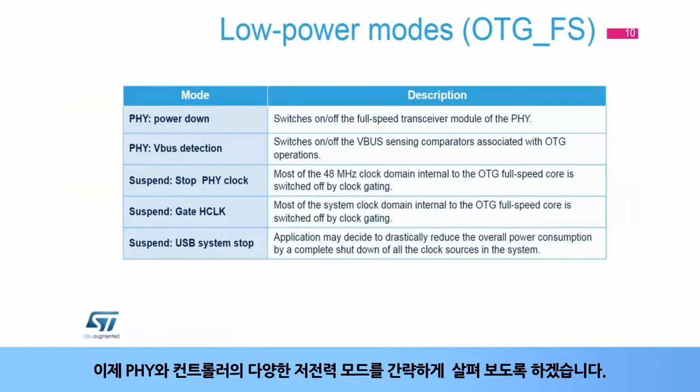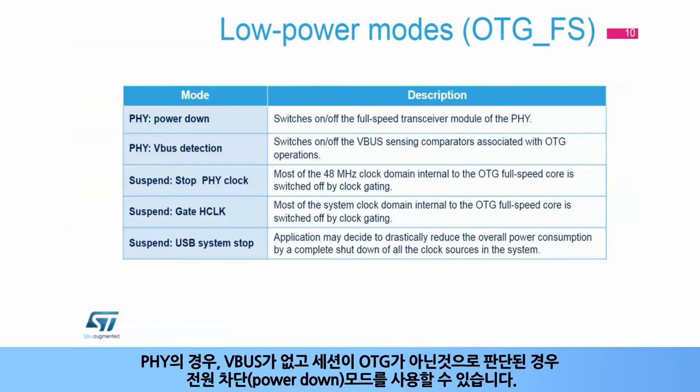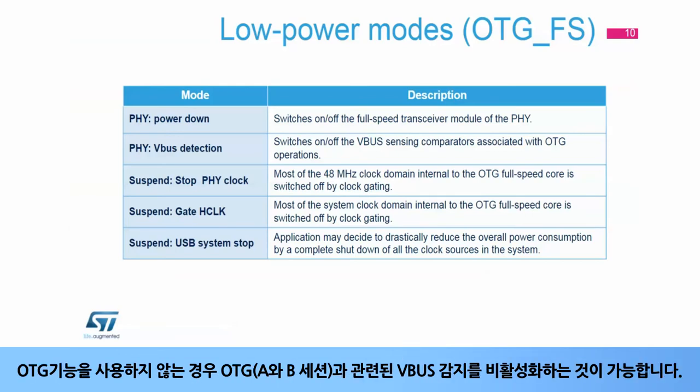Now let's take a brief look at the various low power modes of the PHY and the controller. For the PHY, power down mode can be used, for example, when there is no VBUS present and the session is identified to be not OTG. It is also possible to disable the VBUS sensing related to OTG A and B sessions if the OTG function is not used.